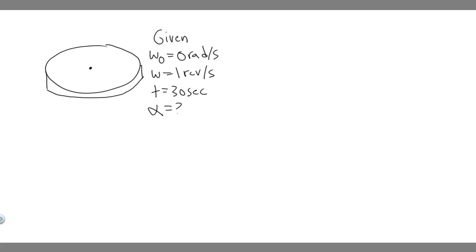In this problem, we're told a potter's wheel moves uniformly from rest to an angular velocity of one revolution per second in 30 seconds. Find A, its angular acceleration in radians per second squared, and B, with doubling the angular acceleration during the given period, have doubled the final angular velocity.